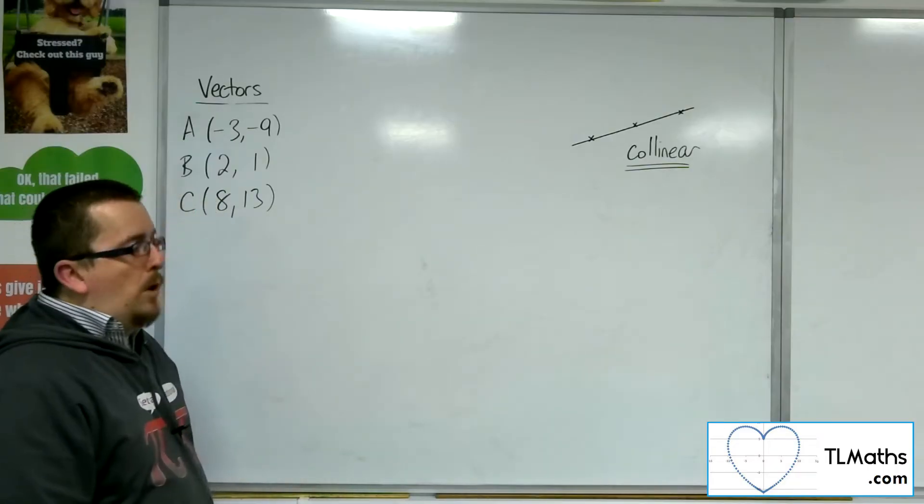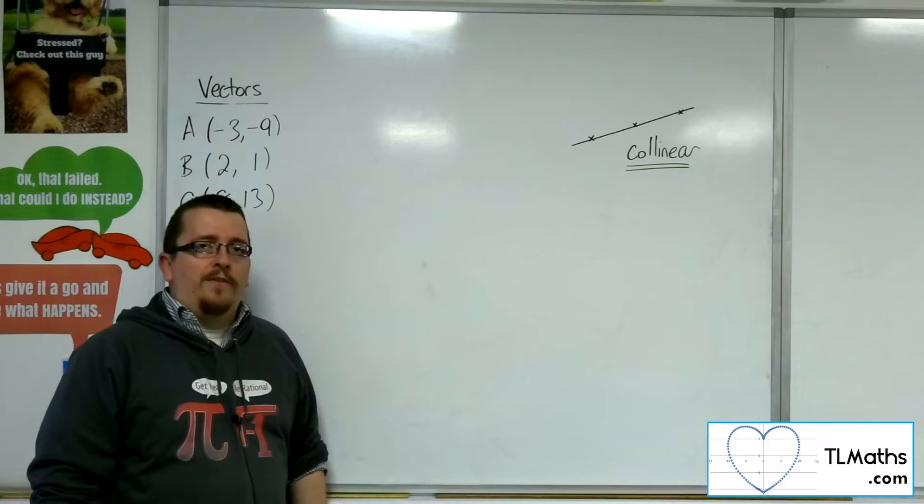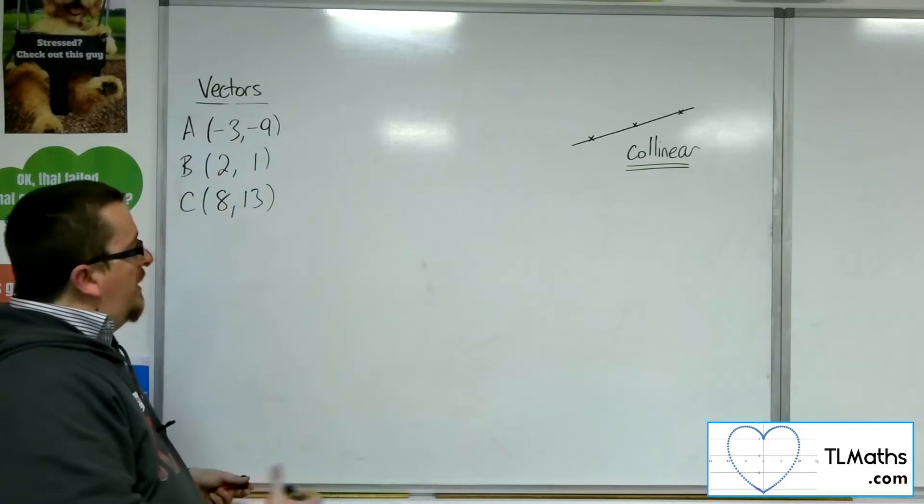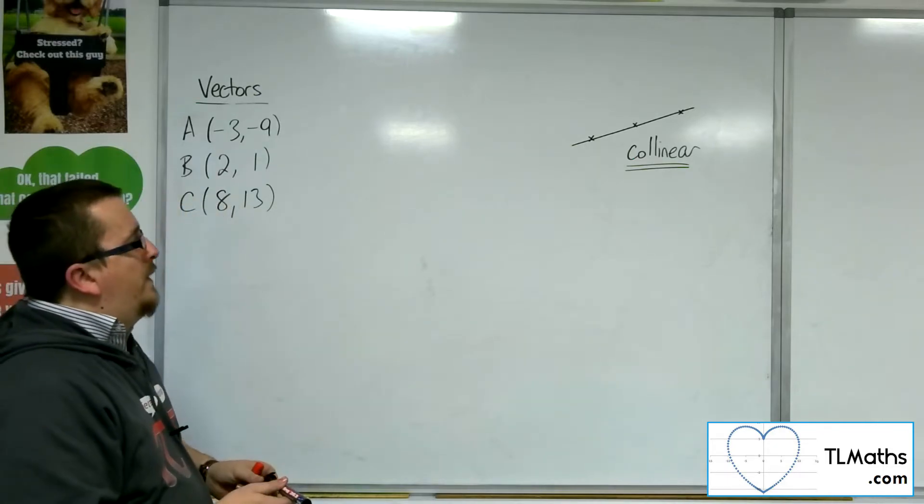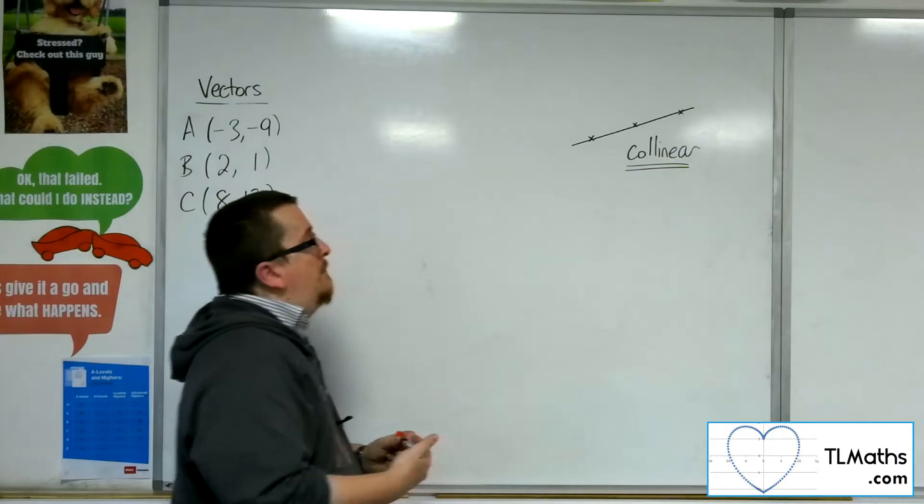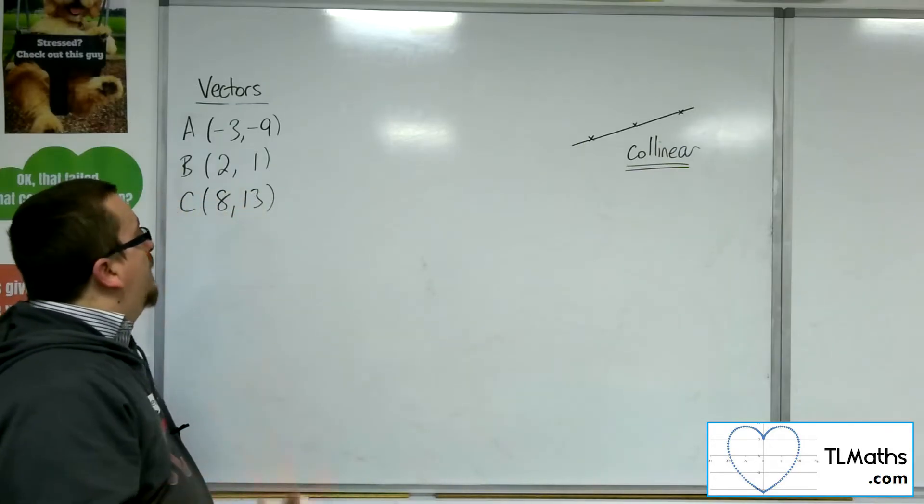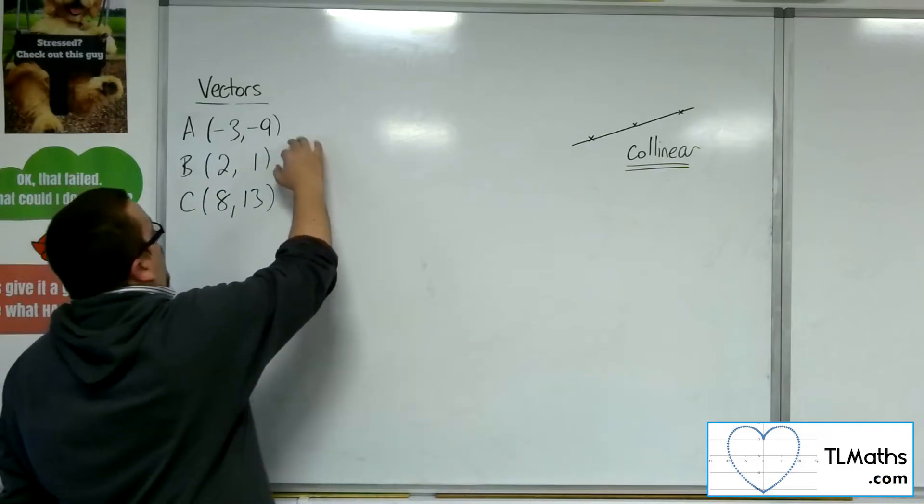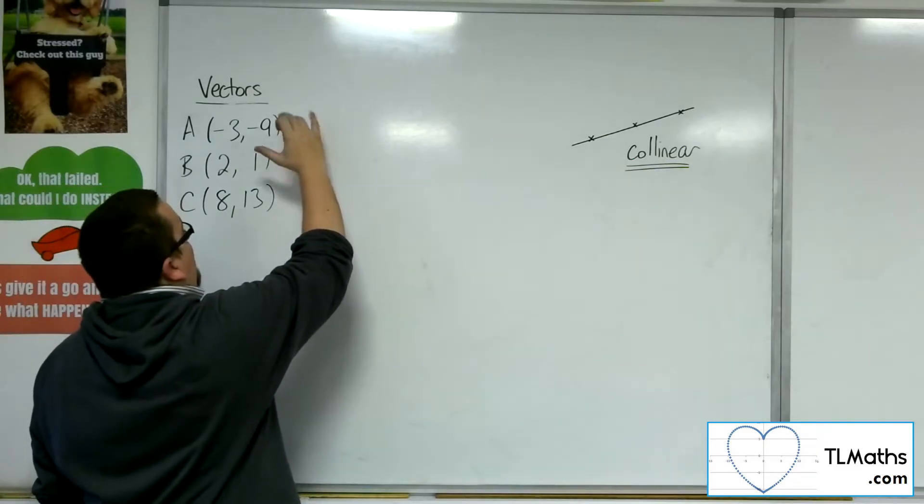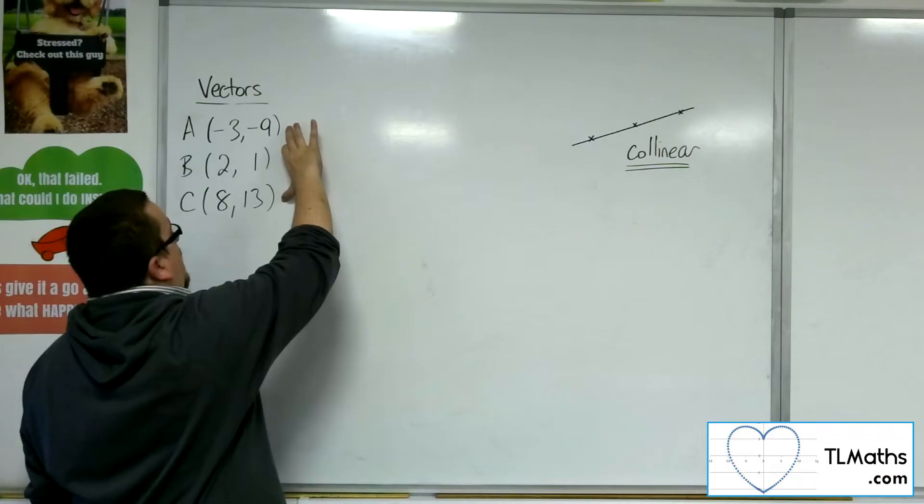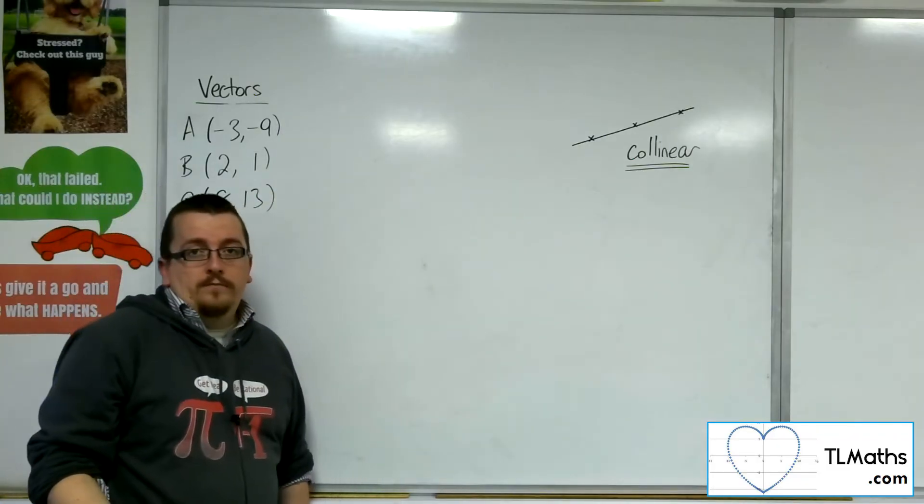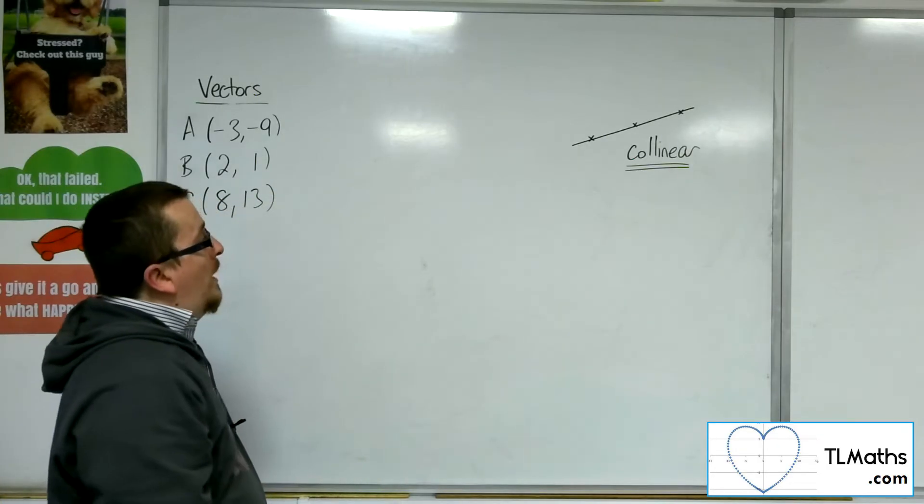There are multiple ways of going about this, and I'll describe a few of them. One way would be to find the vector from A to B and then from A to C and then show that they are parallel. That would be one way.